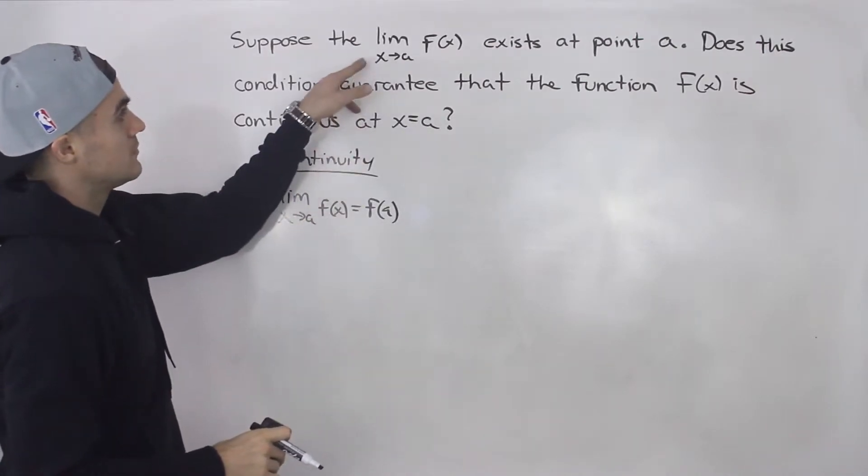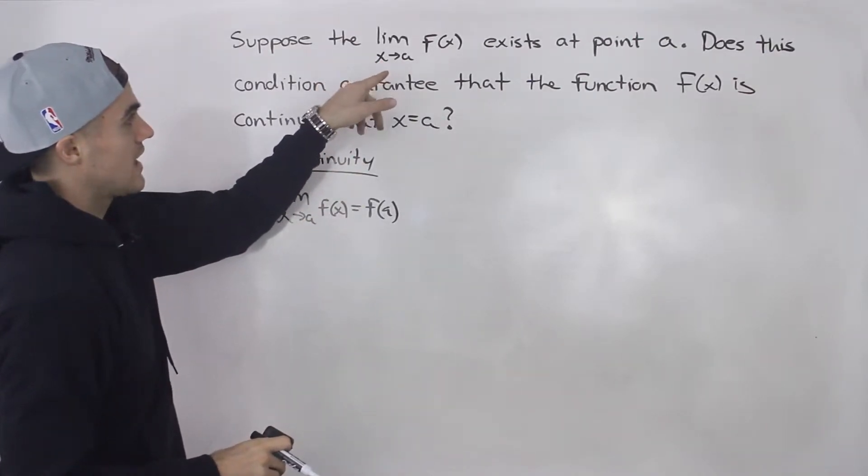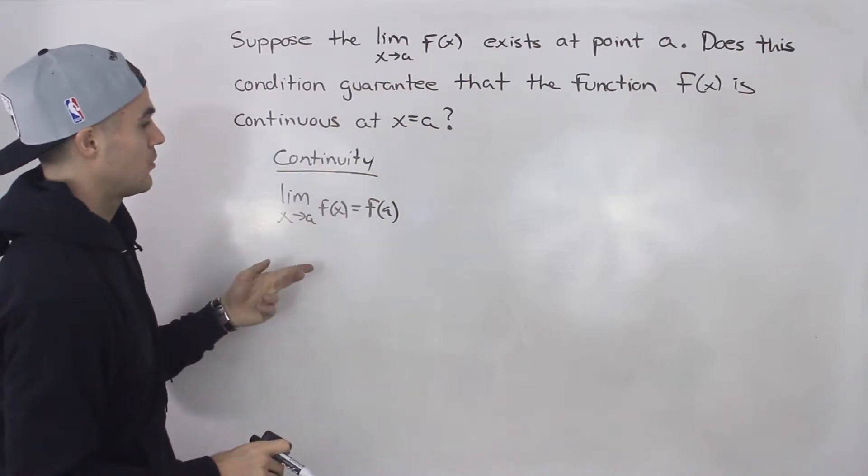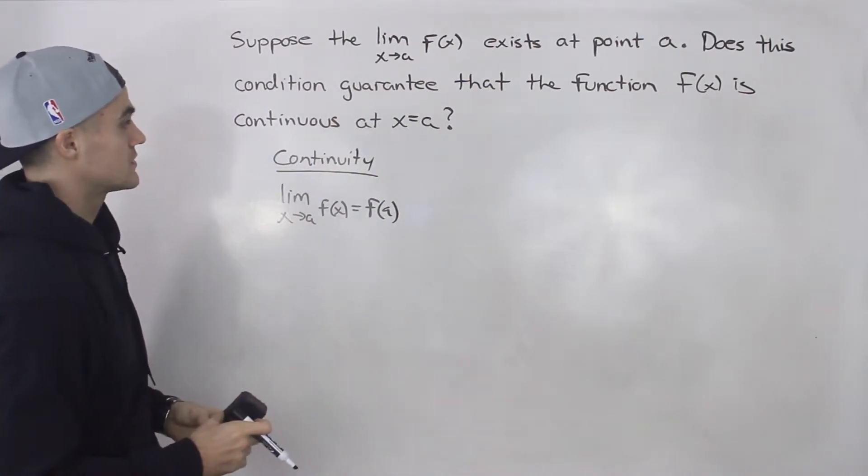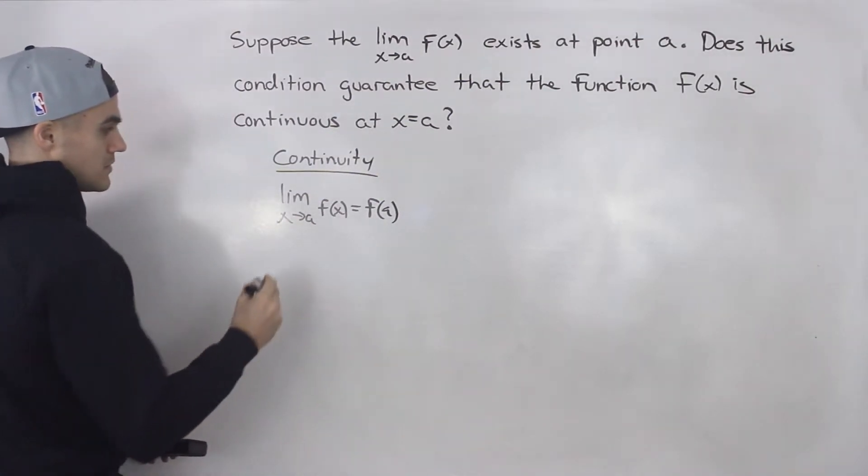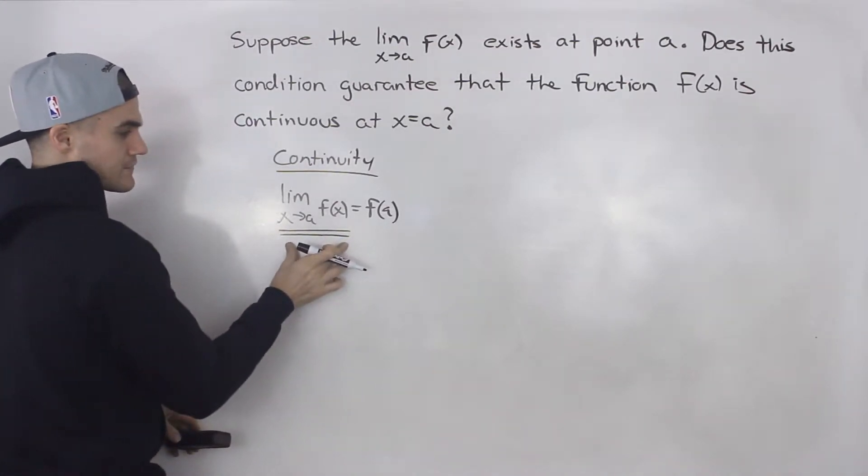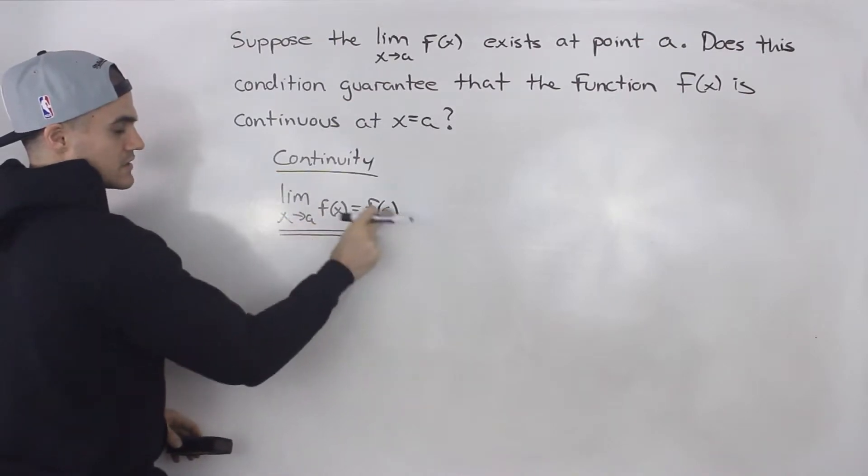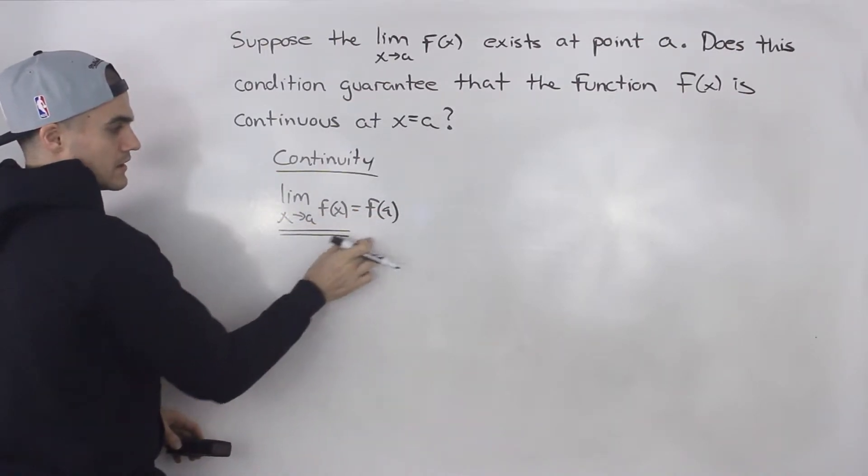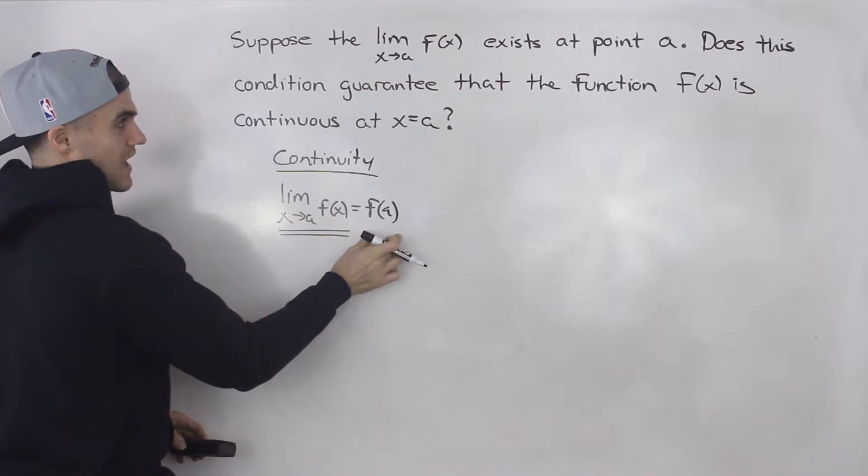So suppose the limit as x approaches a of f of x exists at point a. Does it guarantee continuity? Well, no, it doesn't because we're only guaranteeing that the left side of this condition function is met. It doesn't necessarily mean that it equals f of a.